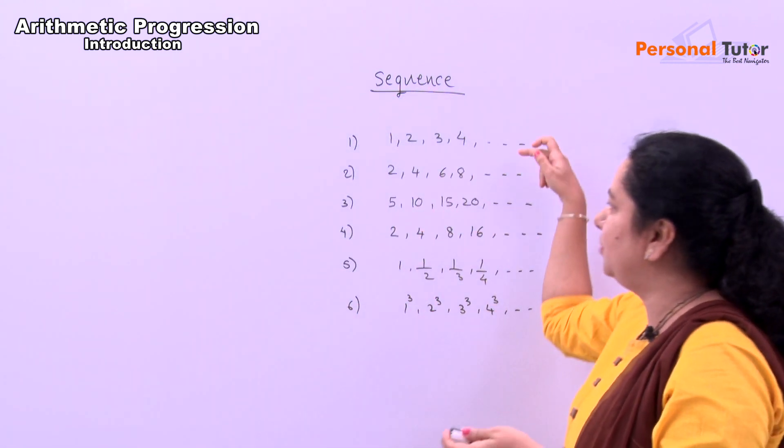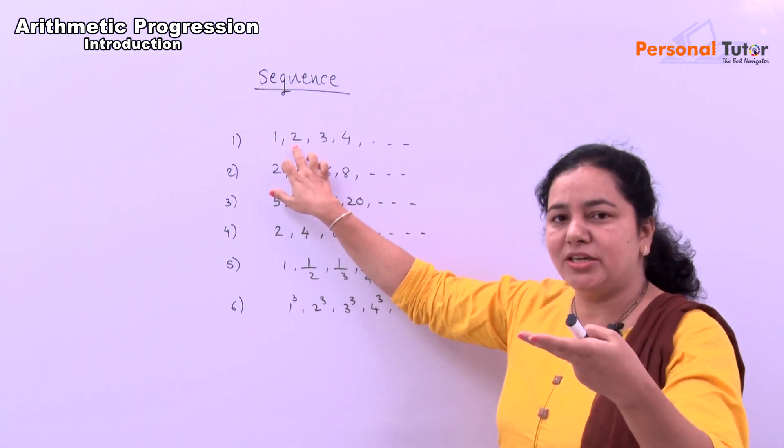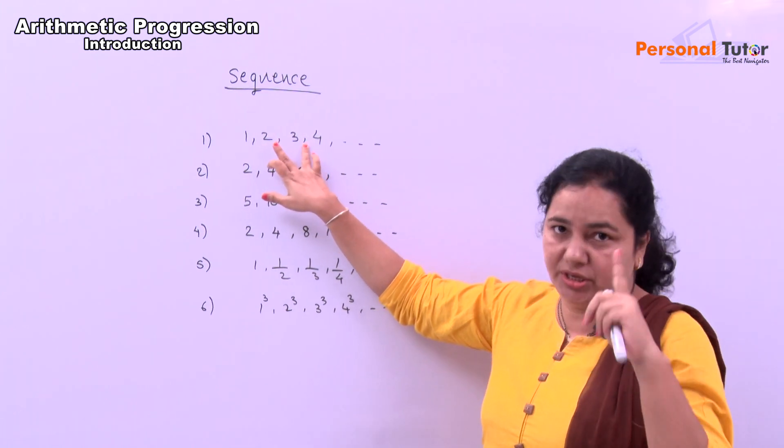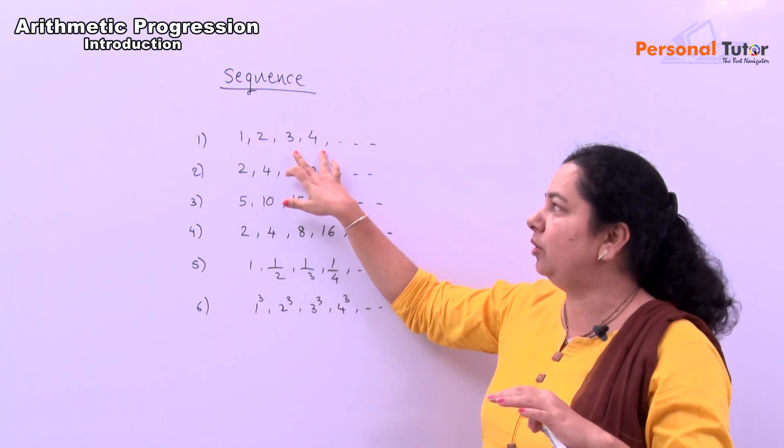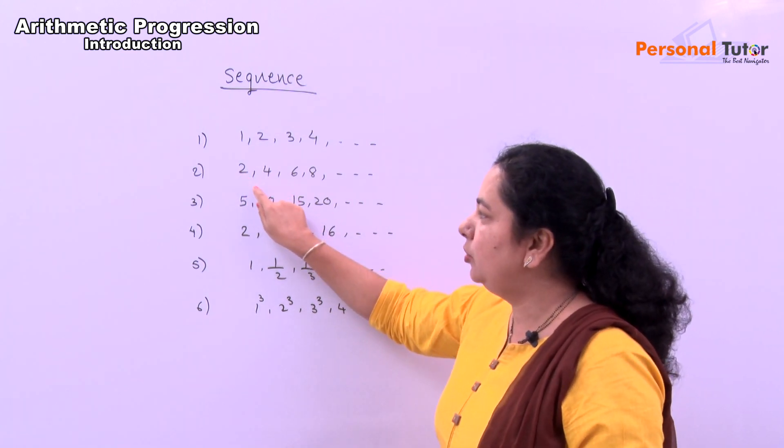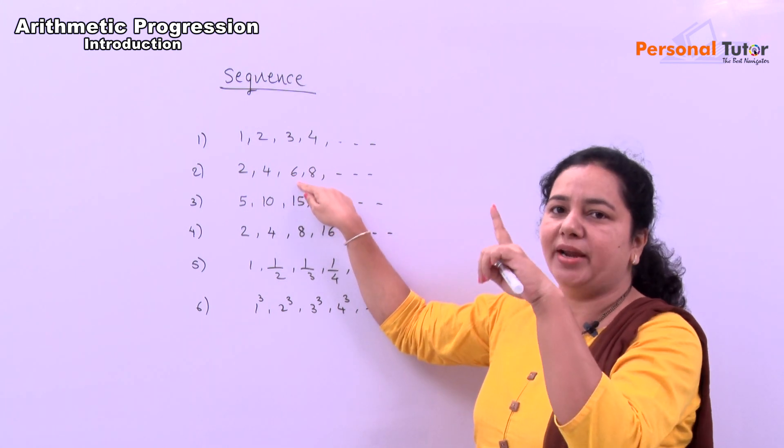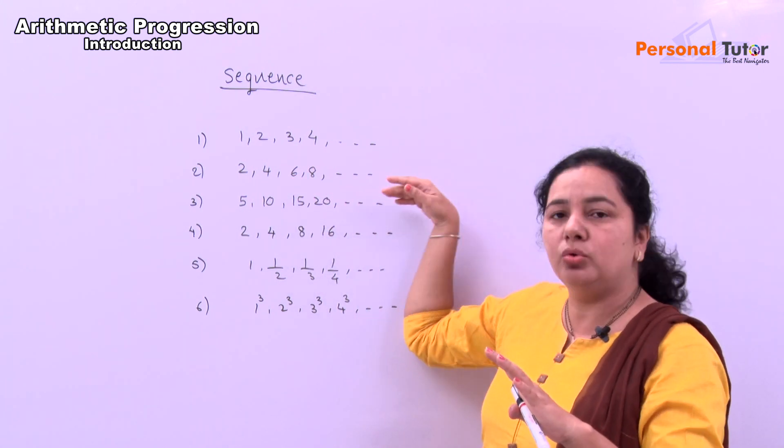First two examples, first three examples. Here, pattern what is? 1 plus 1 is 2. 2 plus 1 is 3. 3 plus 1 is 4. Means you are adding 1, 1, 1. In second example, 2 plus 2 is 4. 4 plus 2 is 6. 6 plus 2 is 8. Means you are adding 2, 2, 2 here.